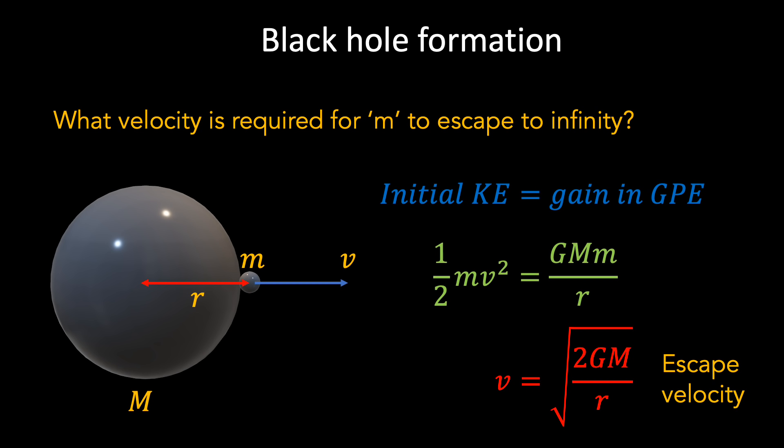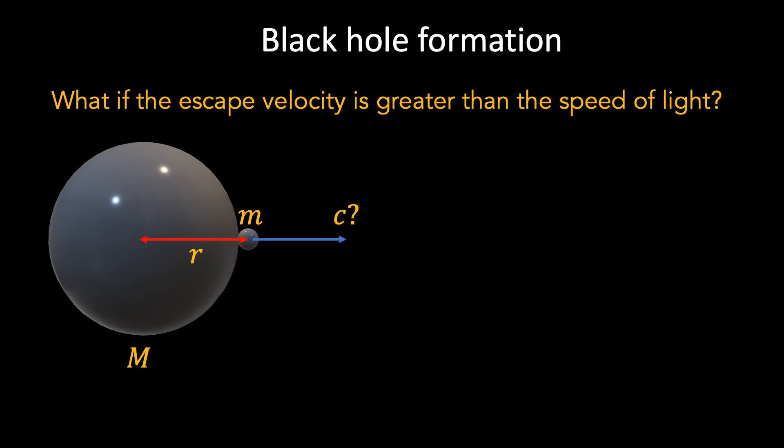The escape velocity equation shows two contributing factors: mass and radius. The more massive an object, the stronger the gravitational force on the surface, and therefore the greater the escape velocity. But if a given mass is squeezed into an ever smaller radius, this too will increase the escape velocity — the more dense an object is, the greater the escape velocity. So a natural question arises: what would happen if an object was so dense that the escape velocity from its surface was greater than the speed of light? In that case, not even light could escape the object, and so it would appear black. An object of such high density, from which not even light can escape, is called a black hole.